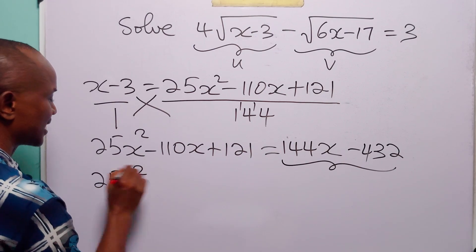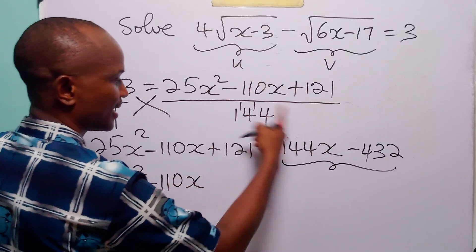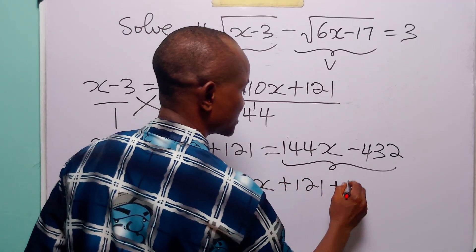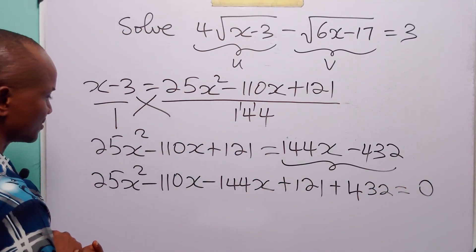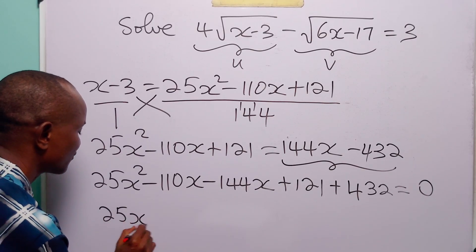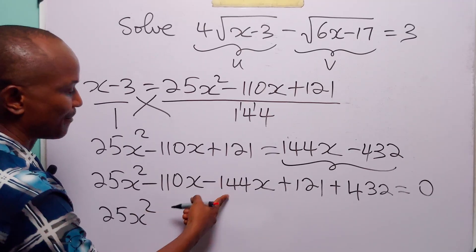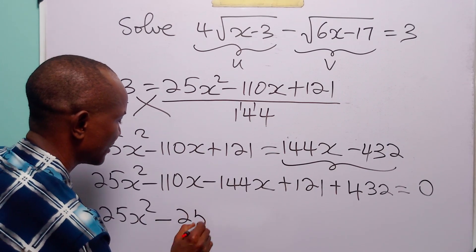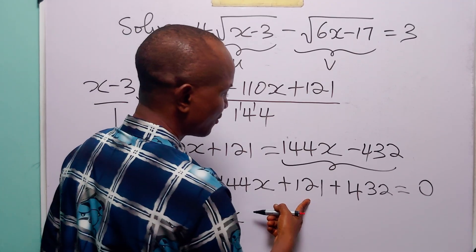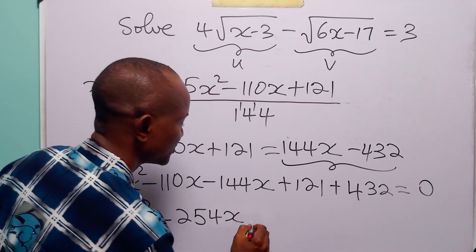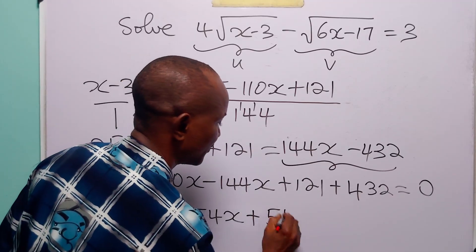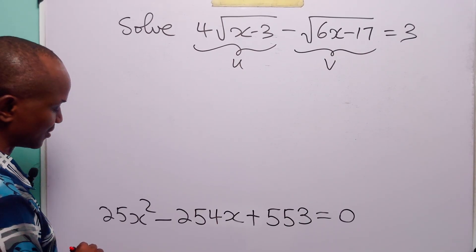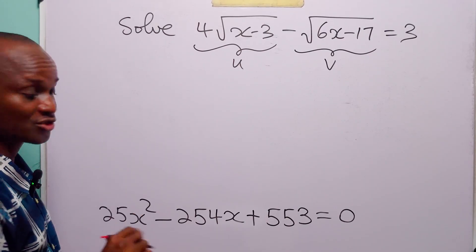Moving all terms to the left-hand side: 25x² - 110x - 144x + 121 + 432 = 0, which gives 25x² - 254x + 553 = 0. We solve this quadratic by factorization. Since the coefficient of x² is not 1, we use the table method.